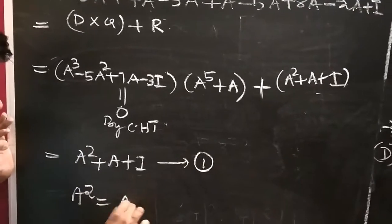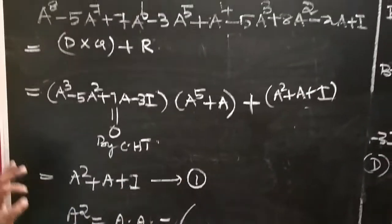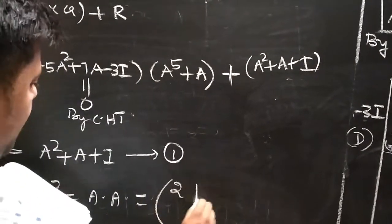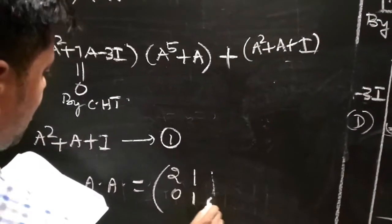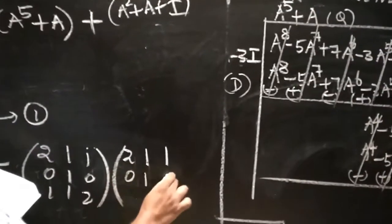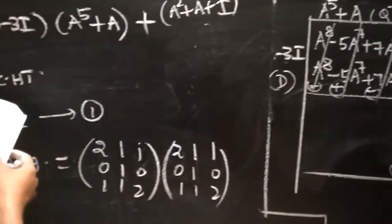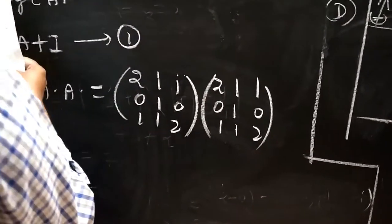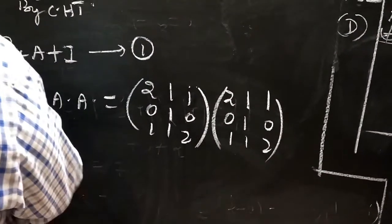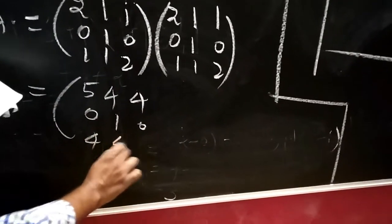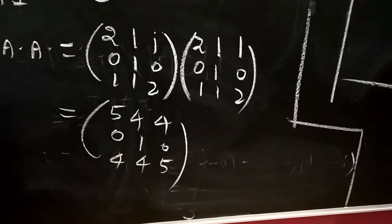To find A squared, multiply A into A. The given matrix A is [[2,1,1],[0,1,0],[1,1,2]]. So A squared equals A into A. Multiplying the two matrices, A squared equals [[5,4,4],[0,1,0],[4,4,5]].